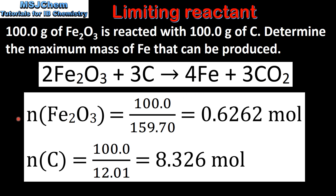The first step in any limiting reactant problem is to change from grams to moles. We will use the equation: amount in moles equals mass divided by the molar mass. Starting with iron oxide, the mass is 100 grams and the molar mass is 159.70 grams per mole. This gives us 0.6262 moles of iron oxide.